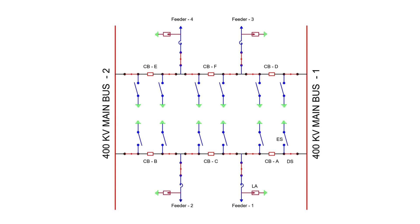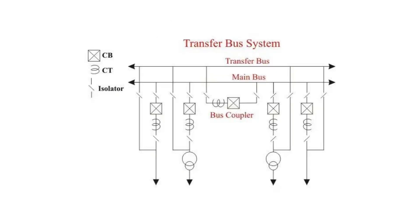Bus fault handling. In case of a bus fault, power to the connected feeders continues from the other bus. This avoids power interruptions required to isolate a faulty bus. In contrast, the two main and transfer bus scheme would trip all associated breakers during a bus fault, resulting in power supply interruption.